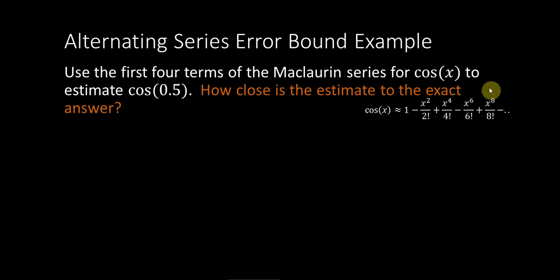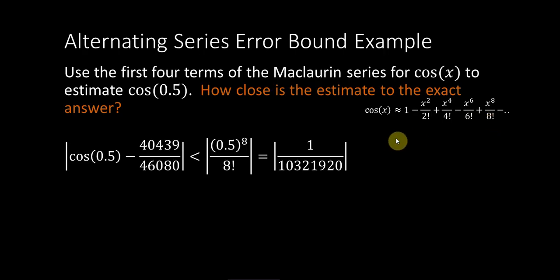So let's use what we established before, the alternating series error bound. So this is the infinite series. The infinite series is supposed to give us the exact answer for cosine, right?